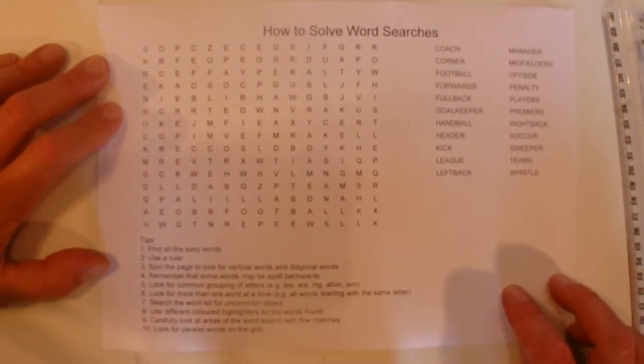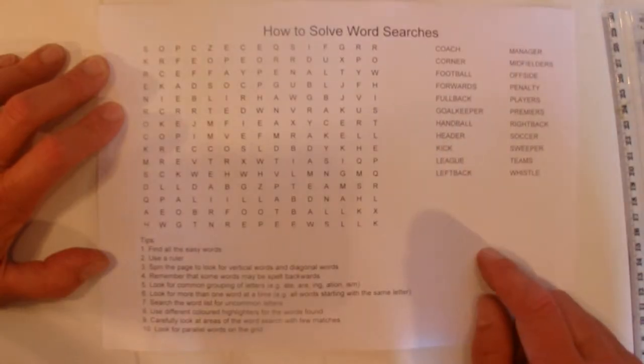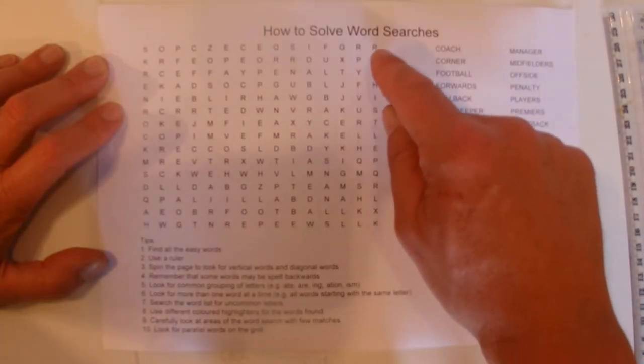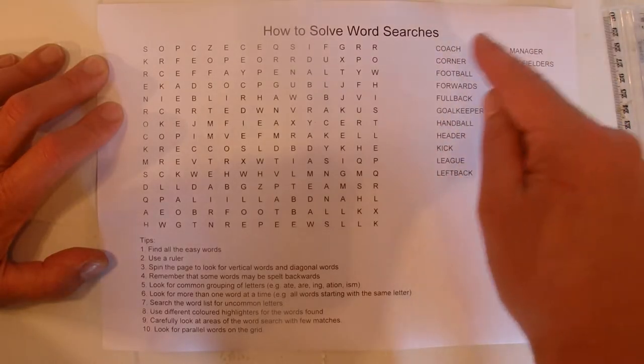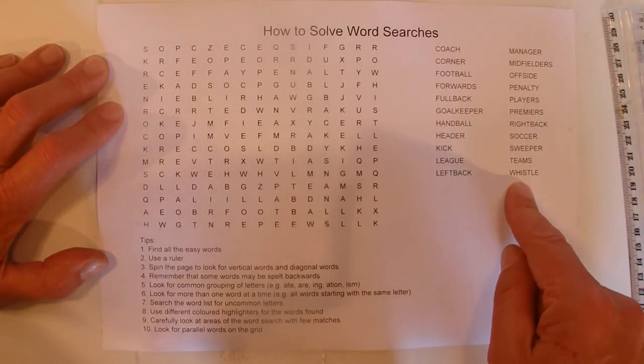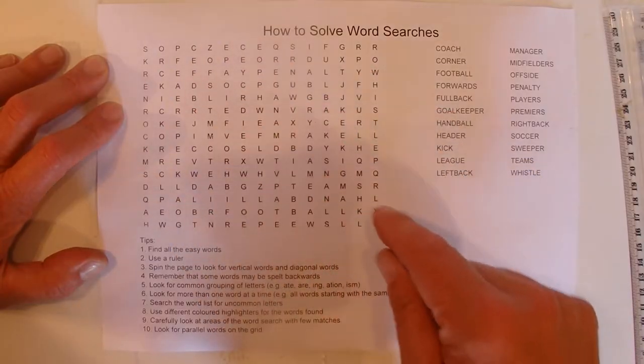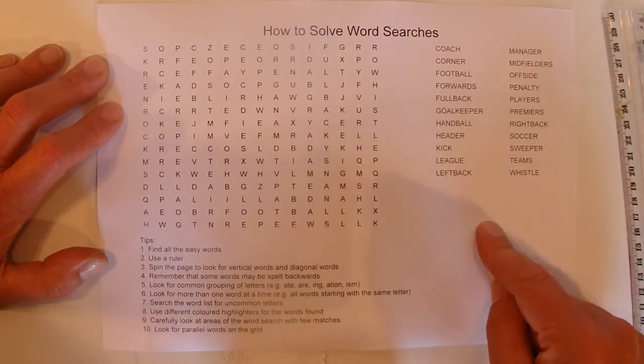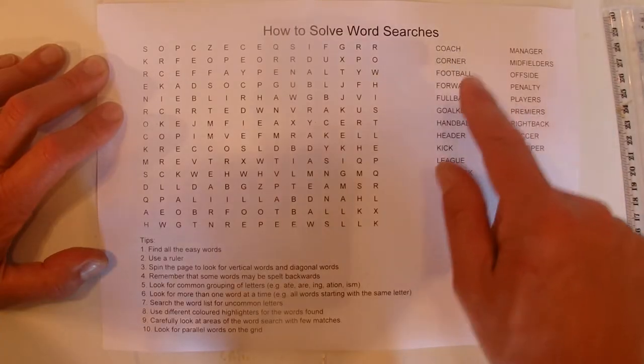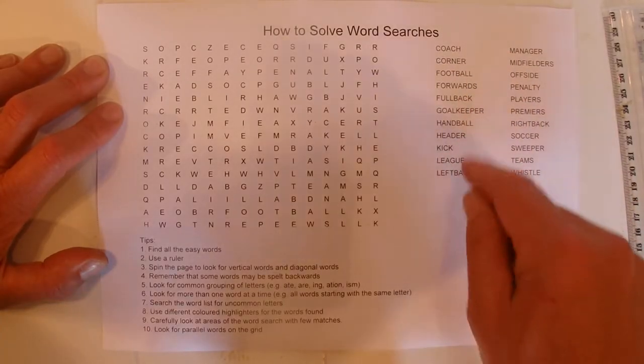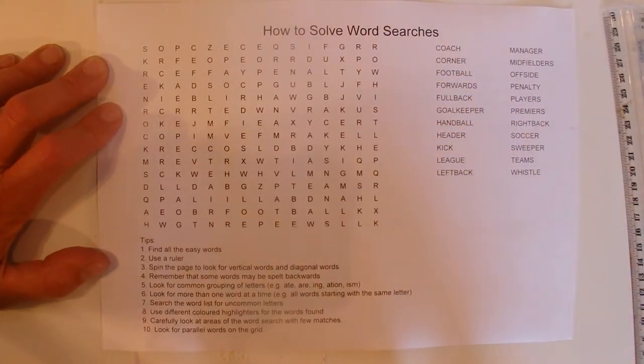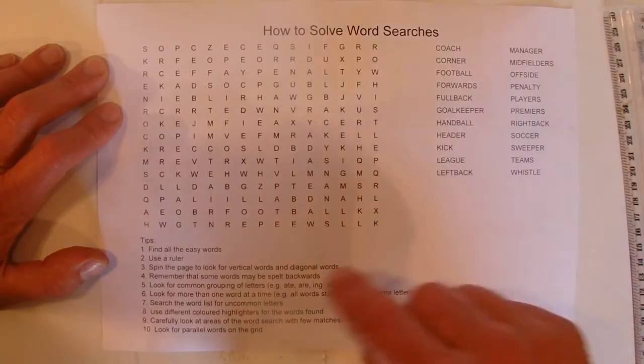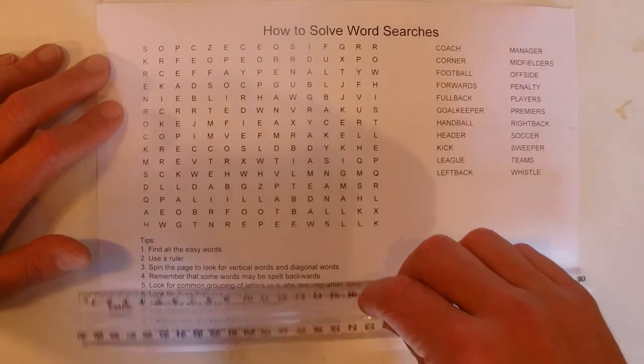Hi there. Today I'm going to show a few tips and tricks that I use when I'm solving word search puzzles. I've got a grid of 15 by 15 letters and over here on the right hand side I've got 22 words that I need to find in this grid to solve this word search. This word search is all about football, football as in soccer. I've got some tips down here that I will go through one by one.